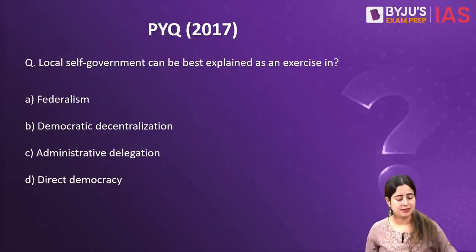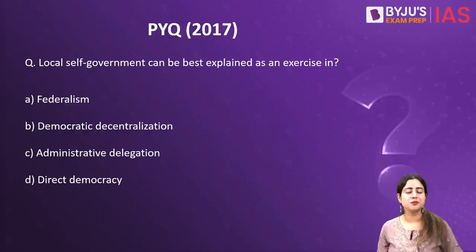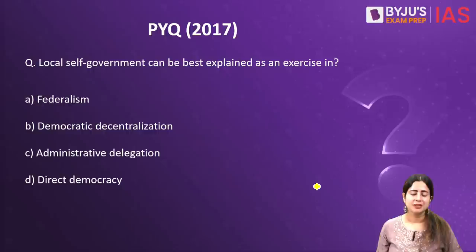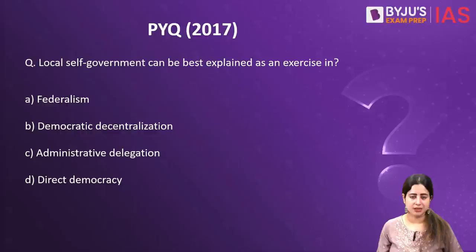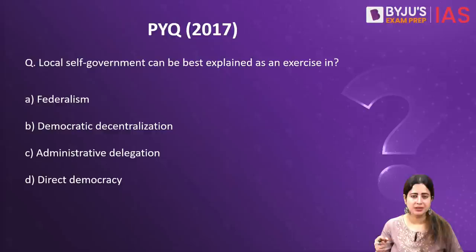Let's now quickly analyse the PYQ — previous year question — for today, coming from 2017. It says: Local self-government can be best explained as an exercise in which of the following? Option A — Federalism, talking about distribution of powers between the centre and states. Option B — Democratic decentralisation, where power is distributed top-down from the union government toward lower rungs until grassroot people become self-empowered.